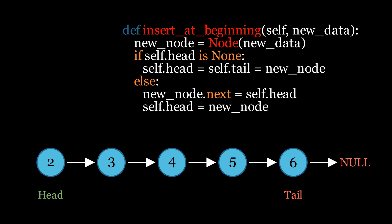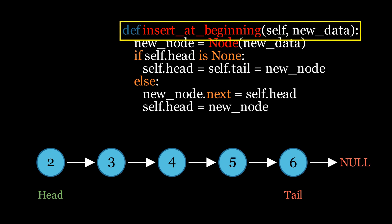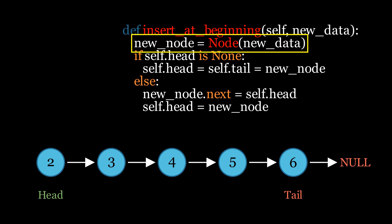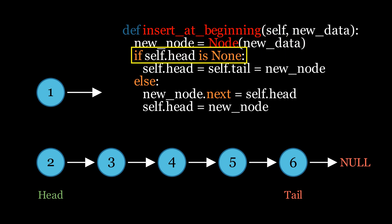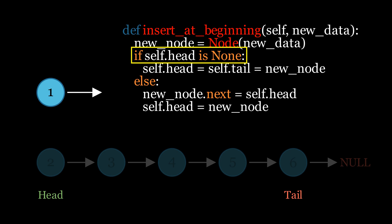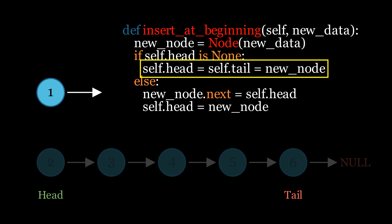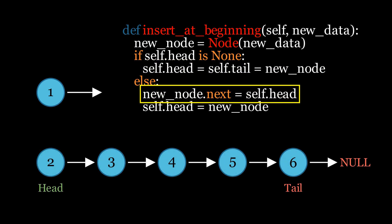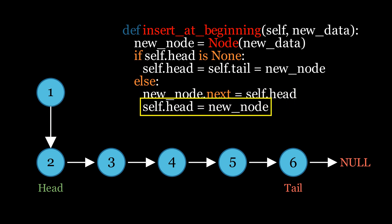The next operation is inserting an element at the beginning of the list. We will define a function with the new data as the input parameter. Inside the function we will create a new node using this data. We then check if the head is None, which indicates whether the list is empty. If the list is empty, we assign both the head and tail to this new node. If not, we set the next pointer of the new node to point to the current head node and then update the head pointer to this new node.